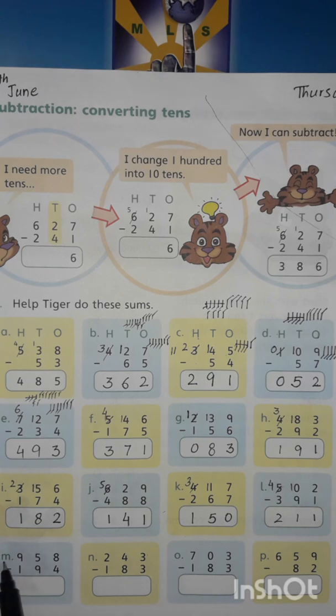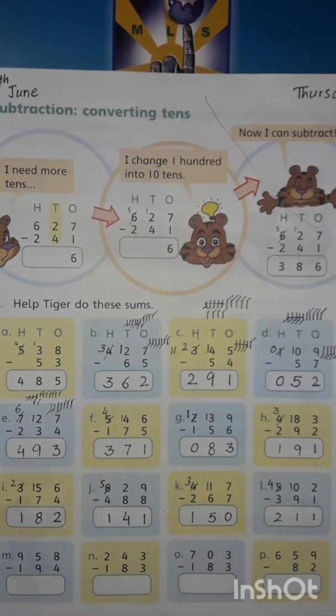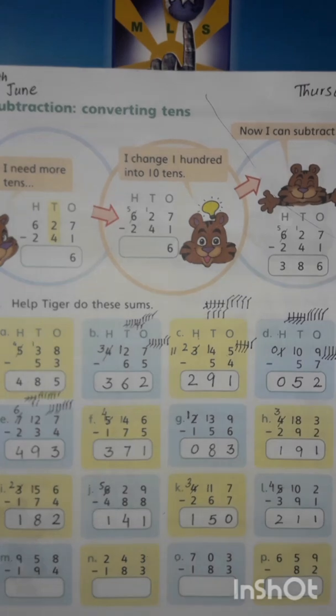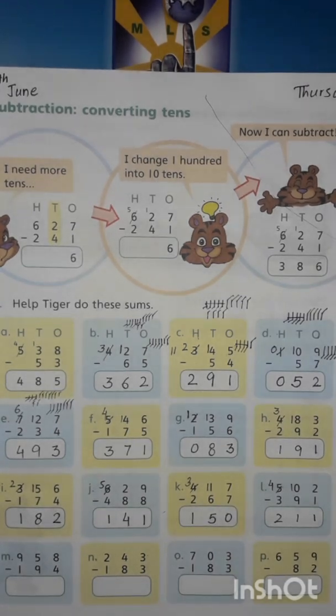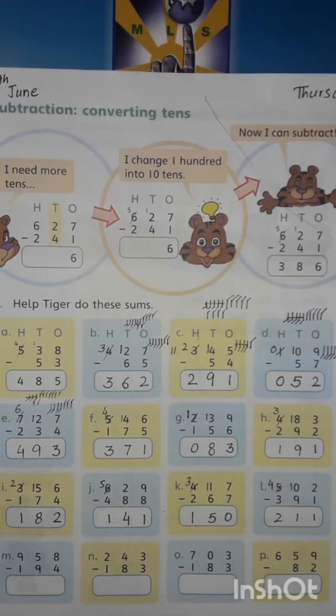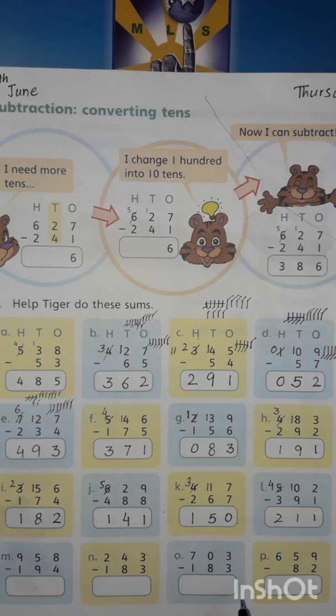M, N, O, P. Page number 47 — try to solve these 4 sums by yourself.